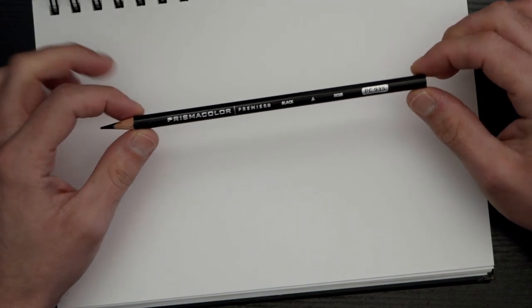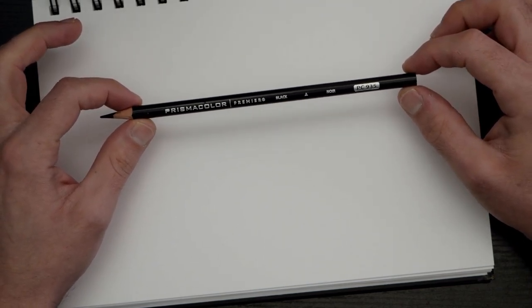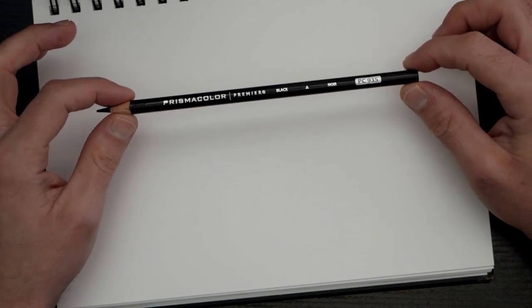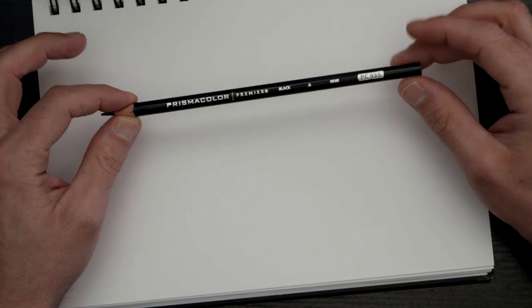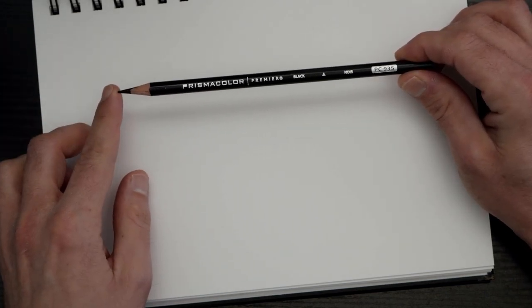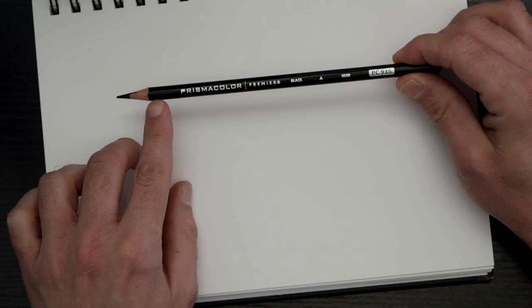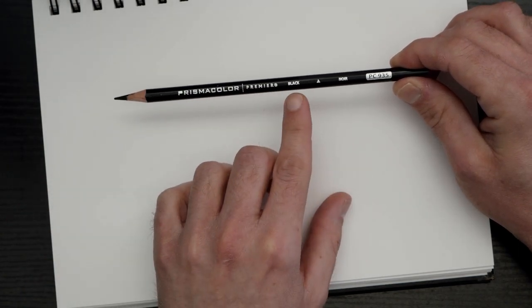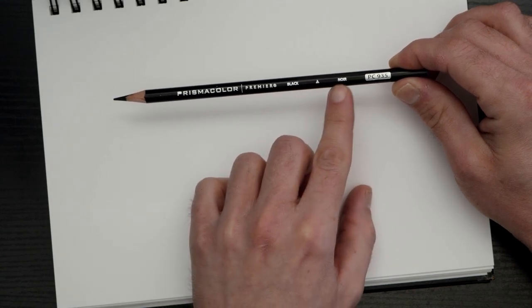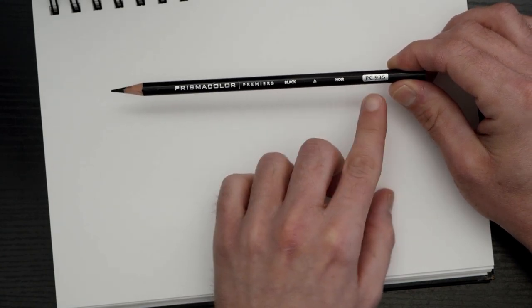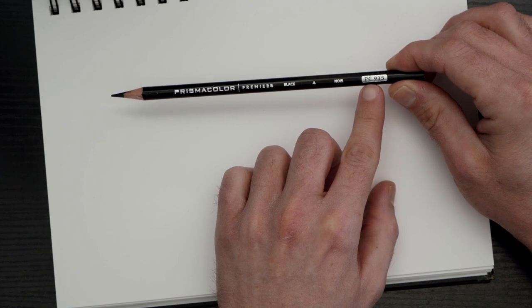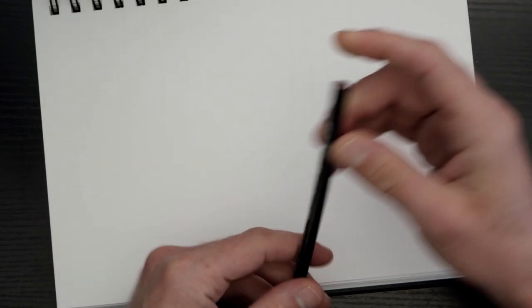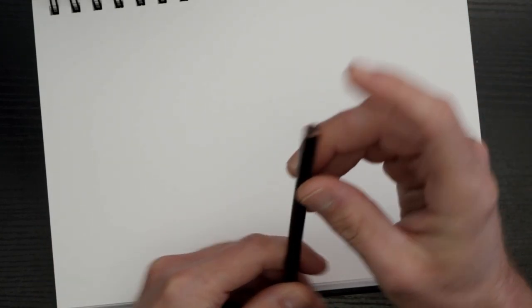This is what the pencil looks like. It's a fairly simple design, which I don't mind. Sometimes simple is better. As you can see, 3.8mm wax core. Country of origin is stamped. You have the Prismacolor branding right there. You have the color name in English and French, and the color number. Because they are open stock, you'll need that to reorder. They, however, do not have a capped end.